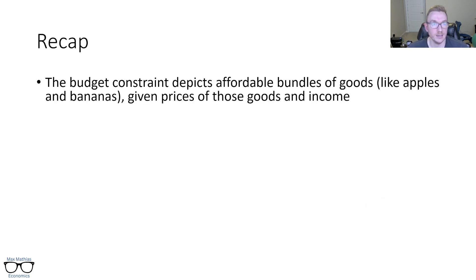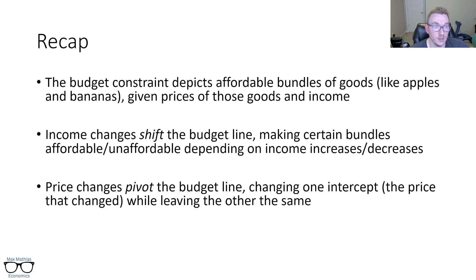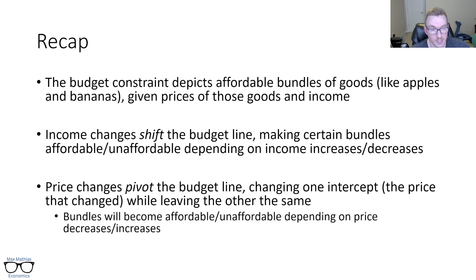So to recap the budget constraint, it depicts affordable bundles of goods like apples and bananas given prices of those goods and income. We showed how to draw that income changes shift the budget line. Remember they are parallel making certain bundles affordable or unaffordable depending on income increases or decreases. And those slashes match. So basically if your income goes up, more things are affordable. If your income goes down, more things are unaffordable than they were before. Same hand price changes, pivot the budget line, changing one intercept while leaving the other the same. Bundles will become affordable or unaffordable depending on price decreases or increases. So if price goes down, more bundles become affordable. If price goes up, more bundles become unaffordable.